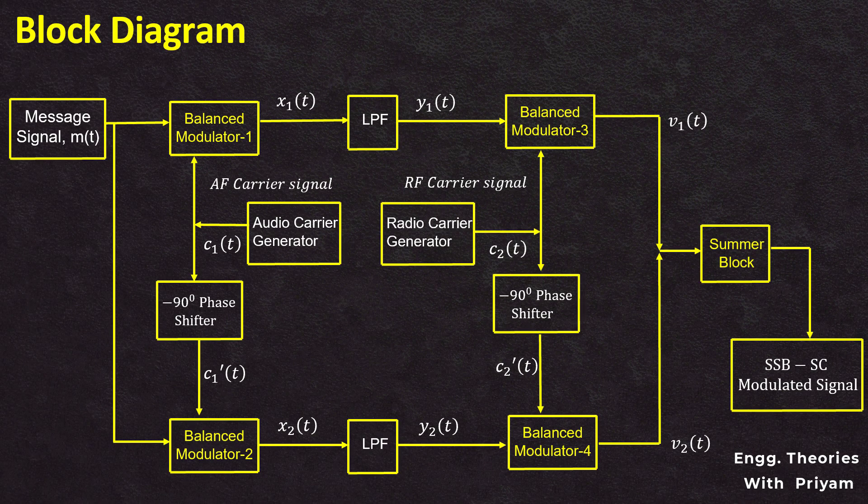This is the block diagram for the SSBSC modulated signal with the help of Weaver's method. This block diagram consists of four balanced modulators, two low pass filters, two 90-degree phase shifters, and a summer block. In this method, only the carrier signal is shifted by 90 degrees rather than both carrier and message signal as in the case of phasing method. So the circuit complexity reduces drastically.